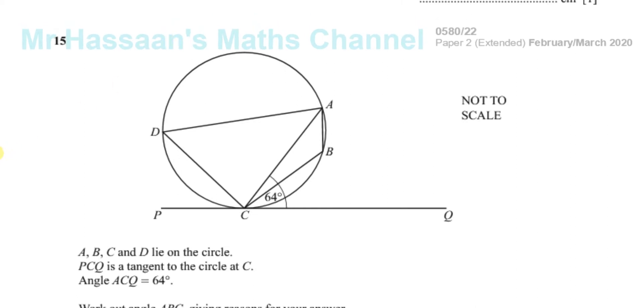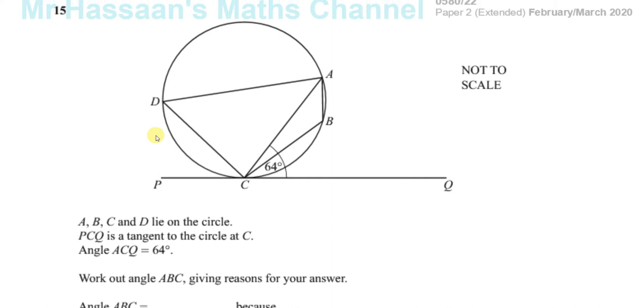Alright, so now it says A, B, C and D lie on the circle. So we can see that A, B, C, D is a cyclic quadrilateral. That's one thing we can see. All four corners lie on a circle. That means it's a cyclic quadrilateral and it has some special properties which we probably will have to use.